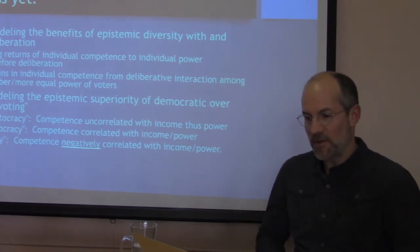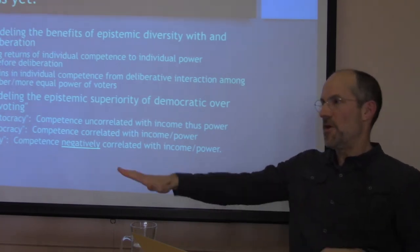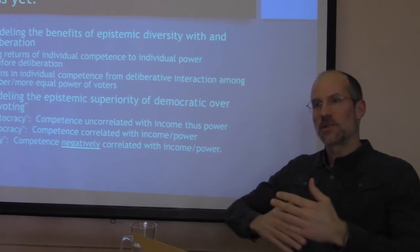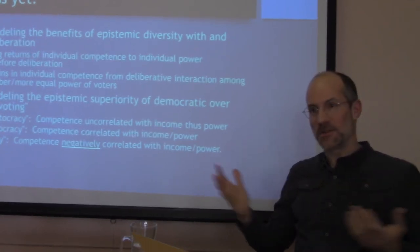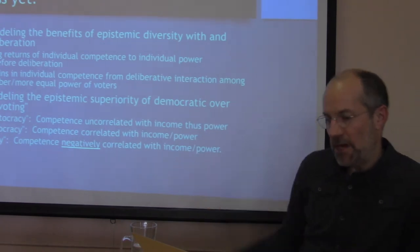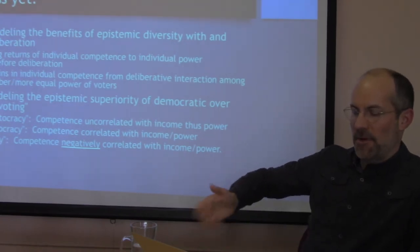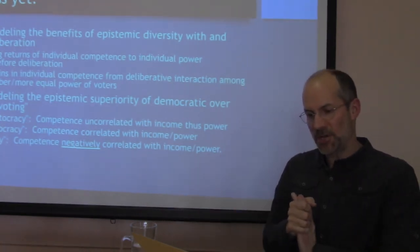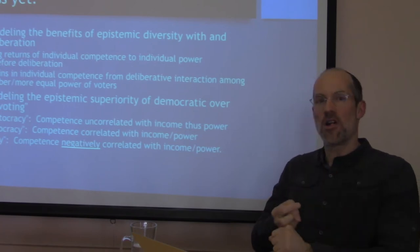I've also begun using the CJT as a point of departure to model the epistemic superiority of democratic over plutocratic voting. It's not just a question of democracy versus monarchy or oligarchy — we can have more complicated rules where people's votes are weighted by their income, which may be realistic given that wealth translates into power fairly easily. I've modeled three situations: one assumes competence is uncorrelated with income; a second, which I call merido-plutocracy, where income is actually an indicator of competence; and a third, which I call plutocracy, where competence is negatively correlated with income and power — the least virtuous and/or least smart have the most power.